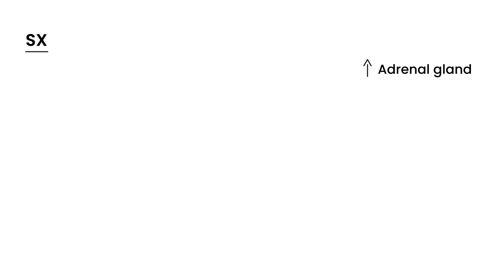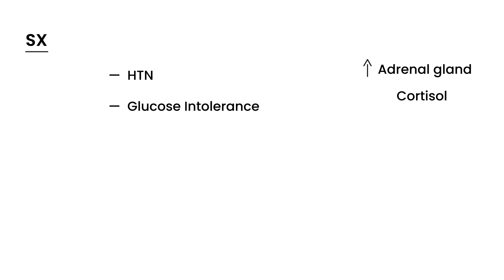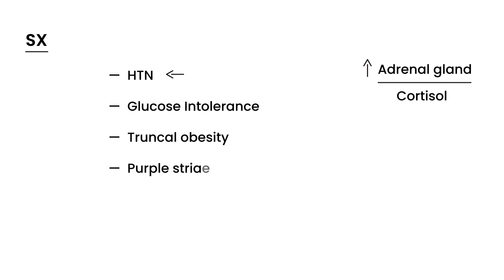All the symptoms of Cushing's happen because of the adrenal gland being hyperstimulated. In addition to cortisol, the adrenal gland also produces other hormones that contribute to these symptoms. Symptoms include hypertension, glucose intolerance — due to mineralocorticoids secreted by the adrenal gland — truncal obesity from cortisol, purple striae commonly seen on the abdomen, and in female patients, menstrual irregularities.